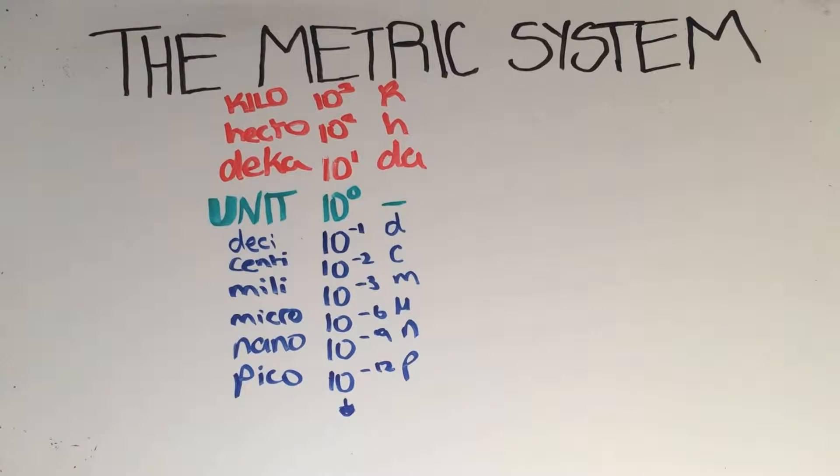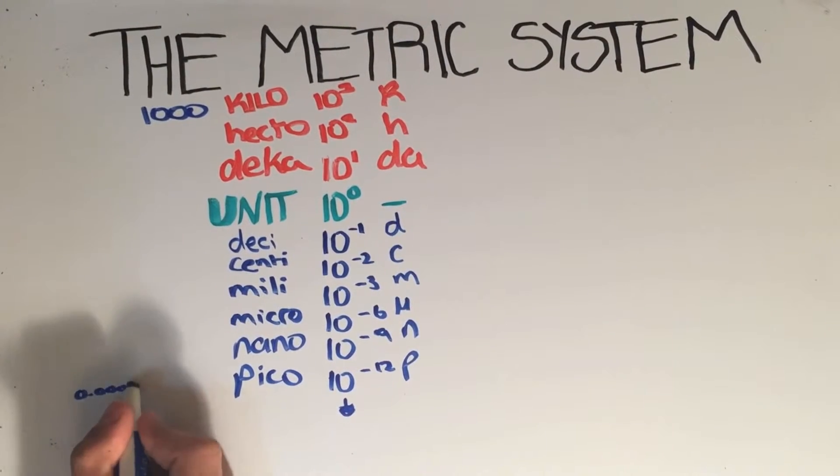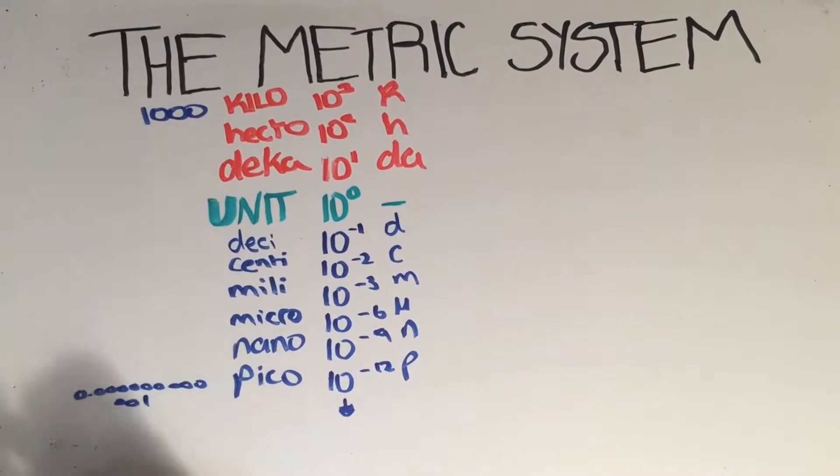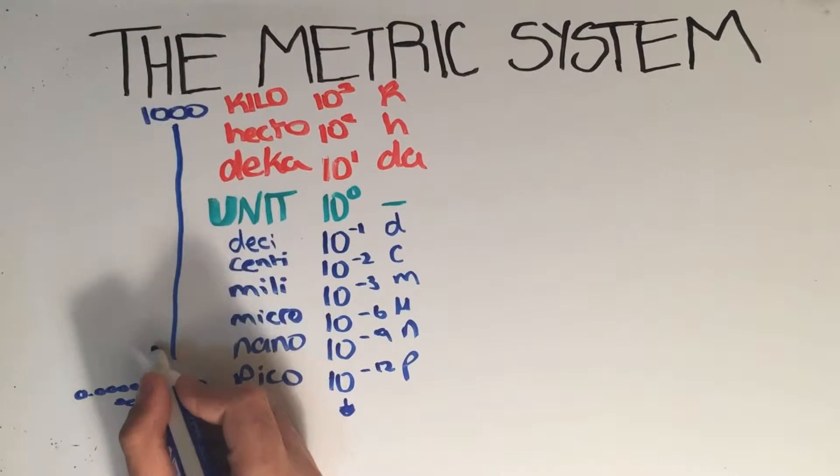These are just prefixes which represent powers of 10. So for example kilo represents a thousand, while pico represents 0.0 with 11 zeros followed by one.